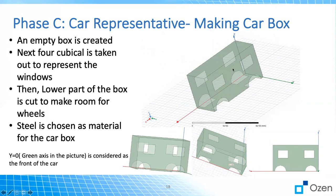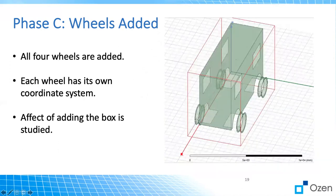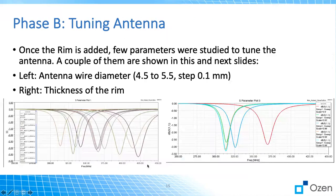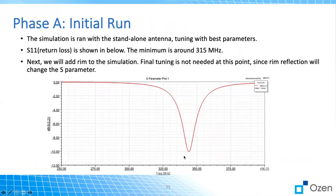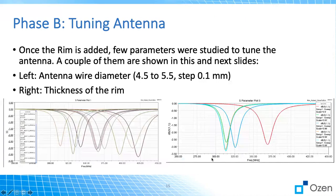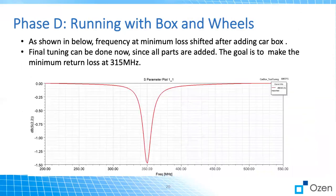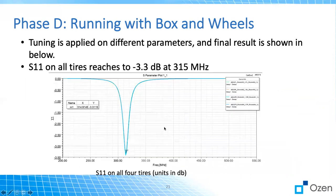These are different views of the car box. The fifth antenna will be somewhere in this area, and the other four antennas are in these four areas. Now we added the wheel, and we want to see the effect of adding the box. As you can see, it shifted to 350 MHz — previously it was at 315. We tuned it back to around 315, but once we add the car box it shifted again because of the car box geometry. So we did the tuning and it came back to 315.